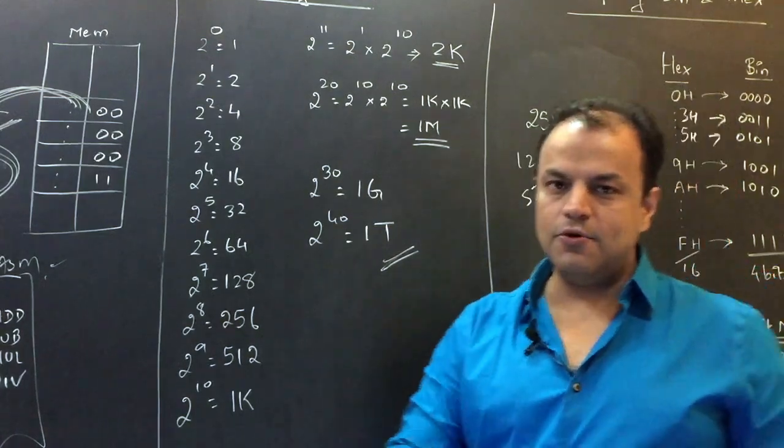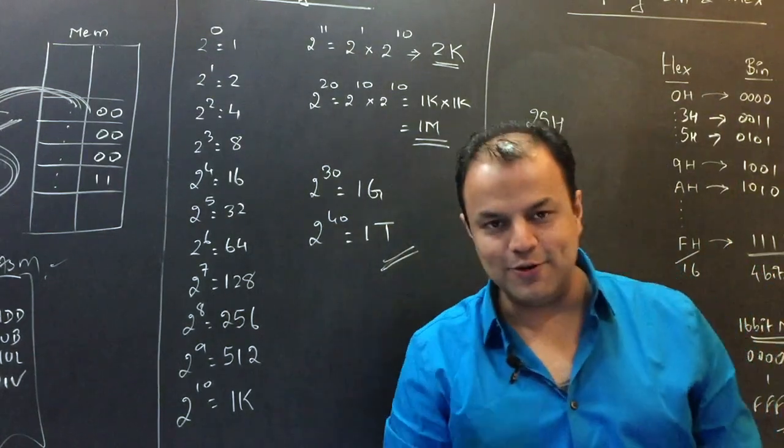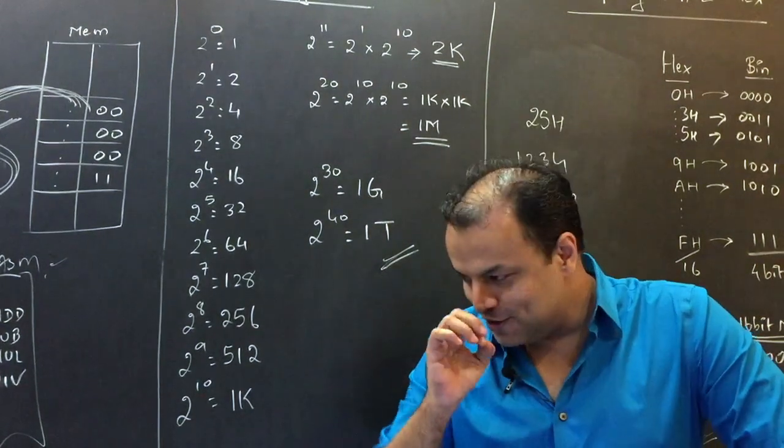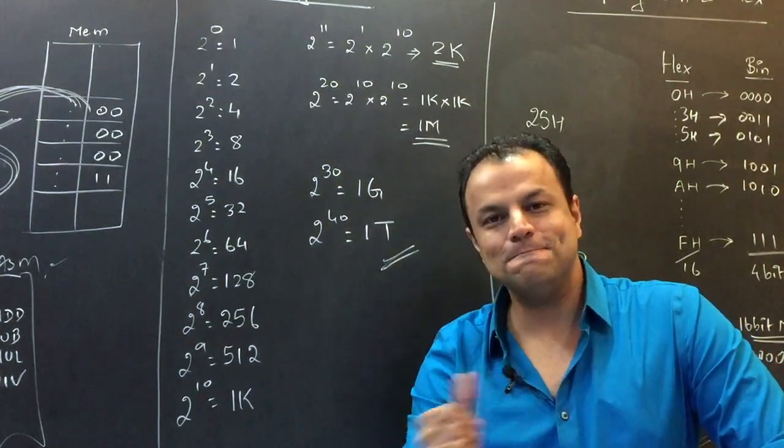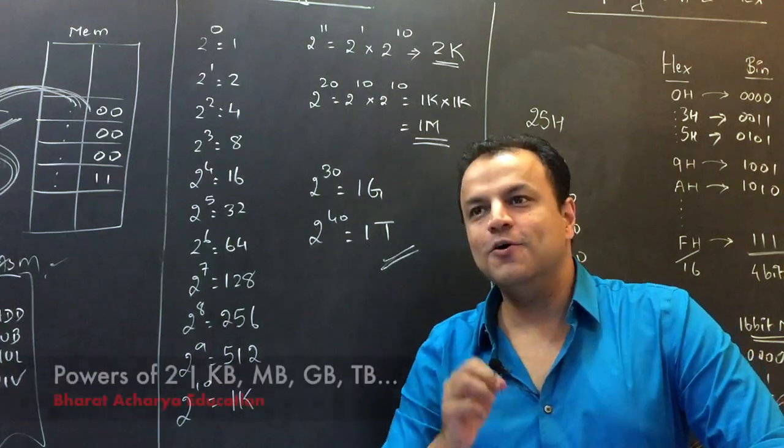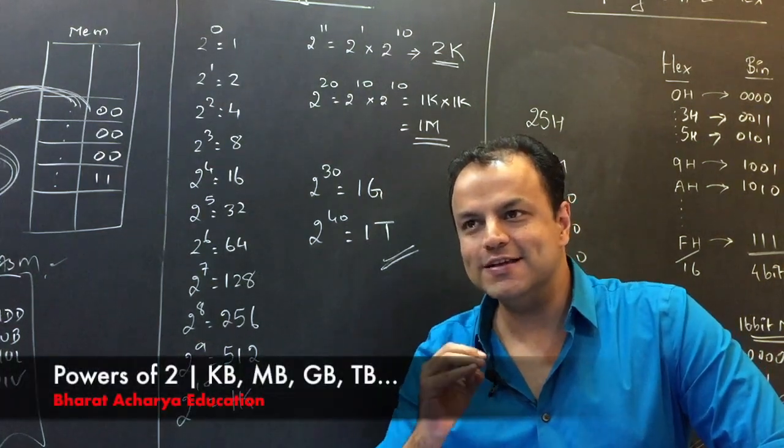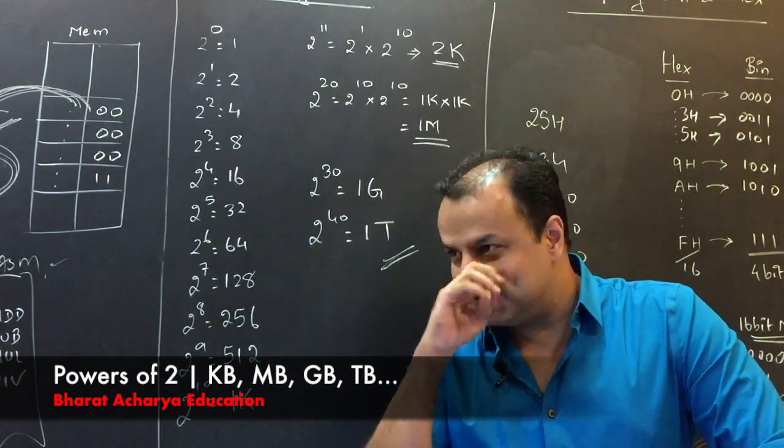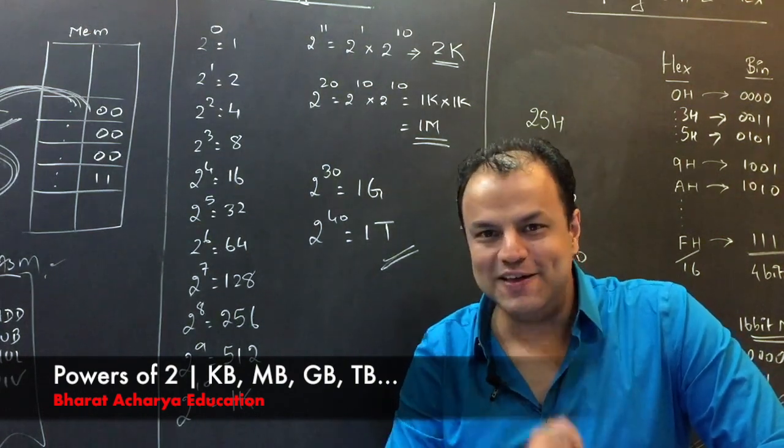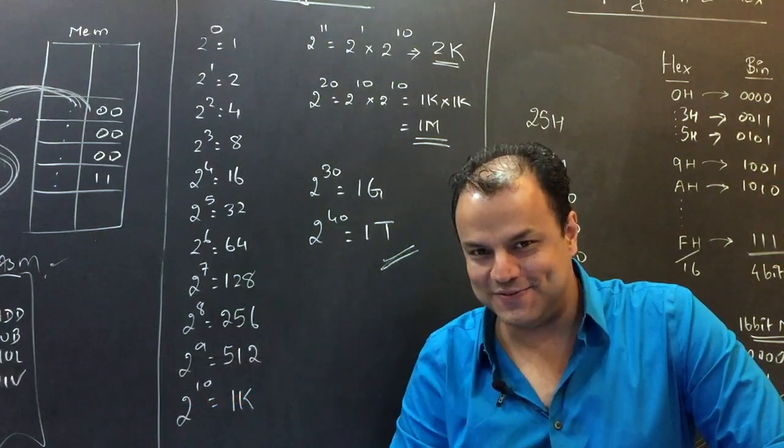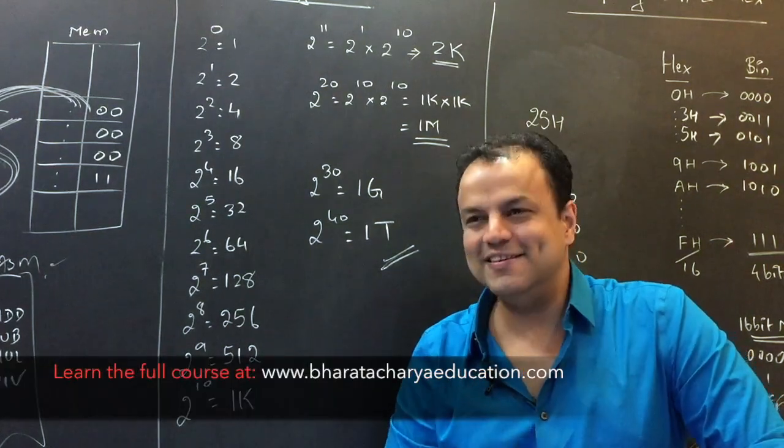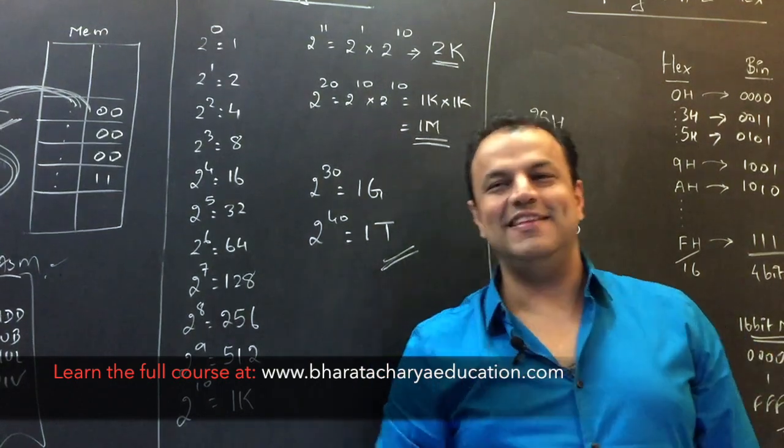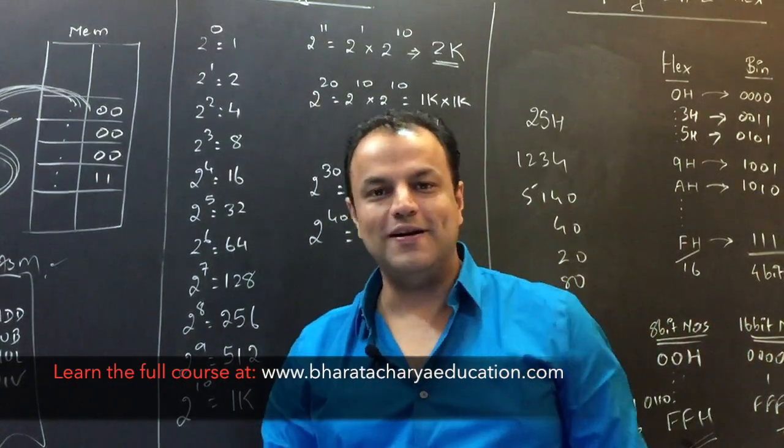I'm going to ask you 4 questions. Try to get all the 4 right. What is 2 raised to 43? 8 tera. Excellent. What is 2 raised to 36? 64 giga. Nice. What is 2 raised to 25? 32 mega. Excellent. What is 2 raised to 14? 16 kilo. Nice.